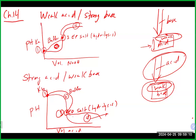All ICE tables done when adding volume should be done in moles, then switched back to molarity using the total volume at the end of the first ICE table. The good news is you have done these calculations before in earlier parts of the chapter. The key is knowing what you're doing, where you're at, and what type of calculation you should be performing.